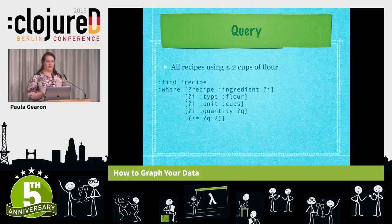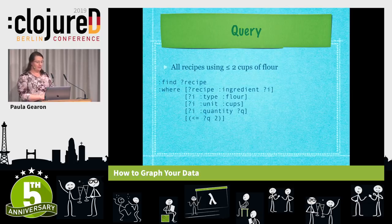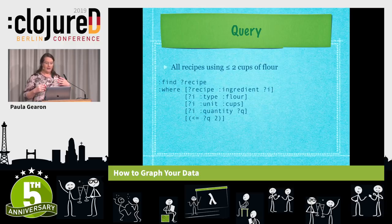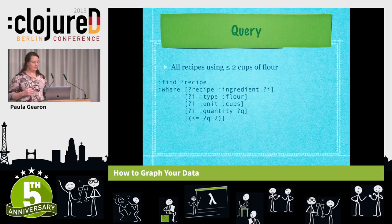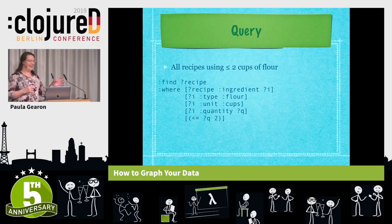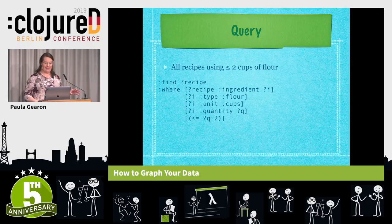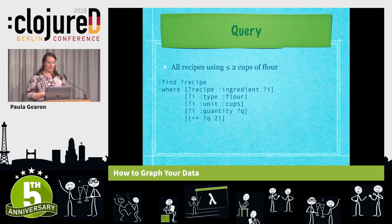Let's have a look at an example query. This here is a Datomic query. This also is the same syntax that both Datascript and Asami use. Similarly to an SQL query, the where clause of the query specifies most of the work. The major difference is that SQL automatically provides variables bound according to column names from a table, whereas graph queries use a different approach. They have a template based on a triple of entity, attribute, and value to assign variable names to columns.